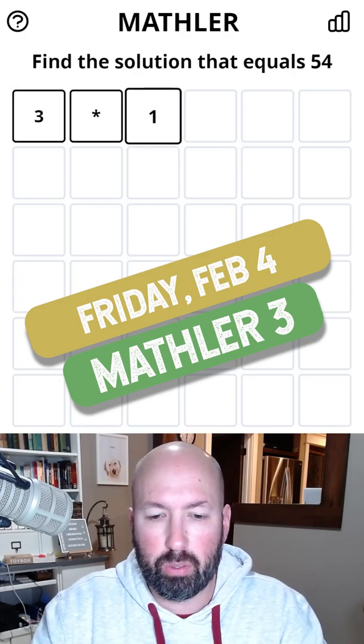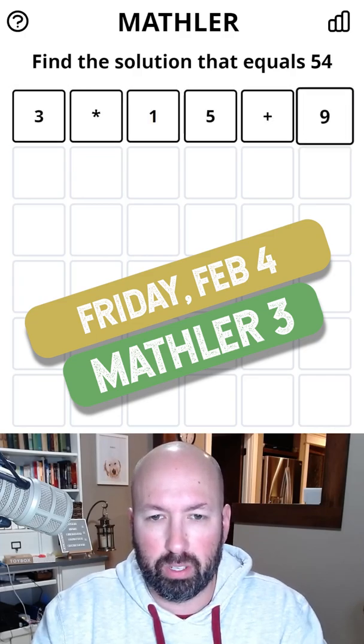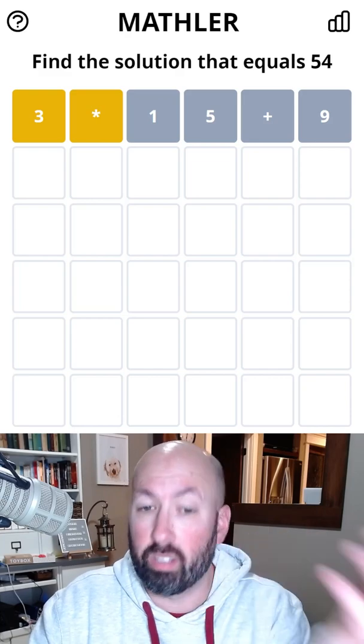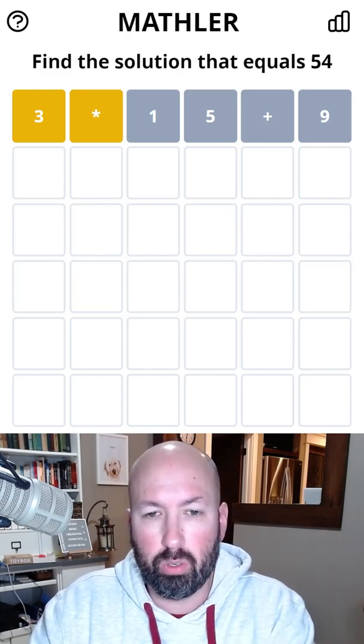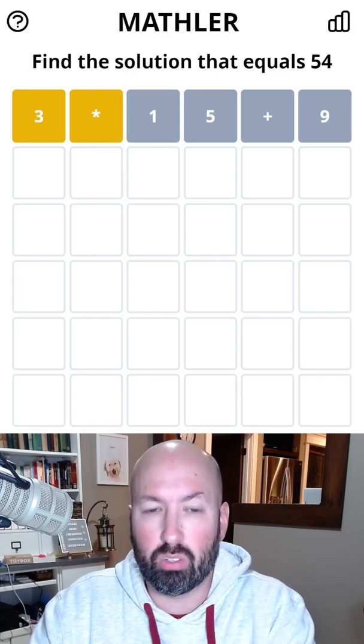I'm going to do my usual multiply two things and add something to start with. Okay, so we know there's multiplication, we know there's a three, there's no one. Getting rid of the one is usually helpful. We know there has to be a two-digit number, and now it has to be at least 20.